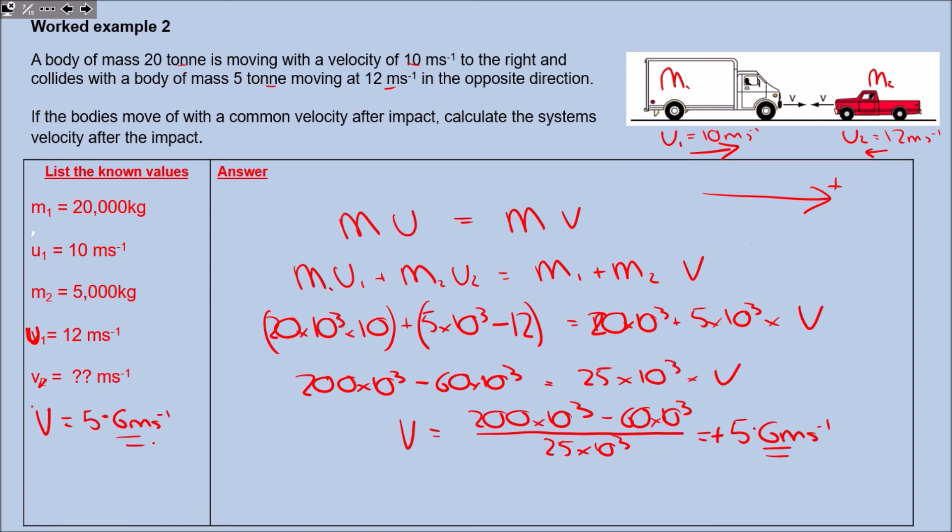Just one last thing: you may see a question that asks you to find velocity in kilometers per hour. I simply do 5.6 times 3.6. Again, check out the earlier videos if you don't know where that 3.6 is coming from. That gives you around 19 - I'll let you find out what the exact answer is.